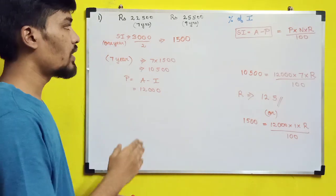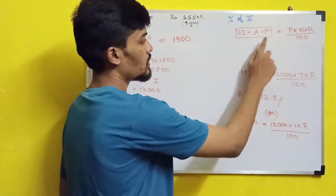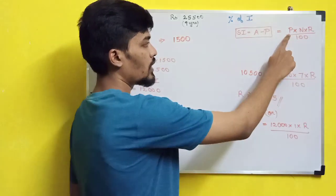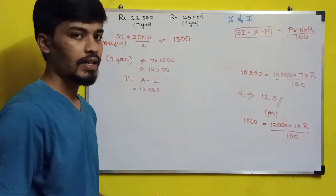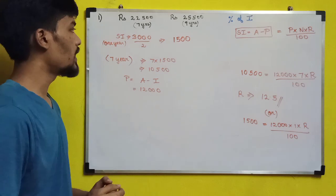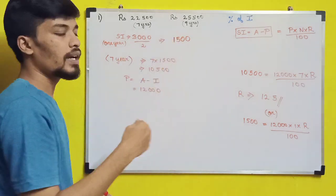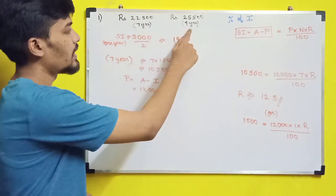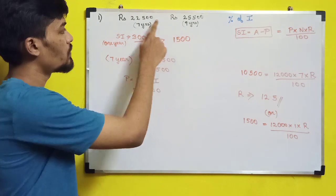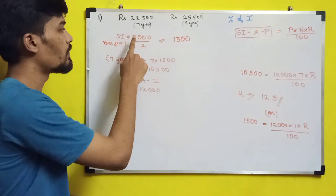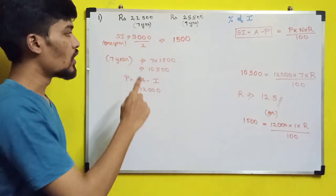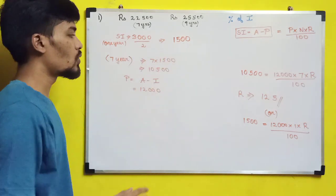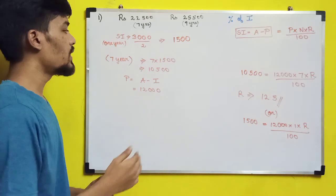We have to find the rate r. We don't know the principal or the interest directly. So we find the interest from the difference: the span between seven and nine years is two years, so 25,500 minus 22,500 gives the interest for two years, which is 3,000. So for one year, 3,000 divided by 2 equals 1,500.